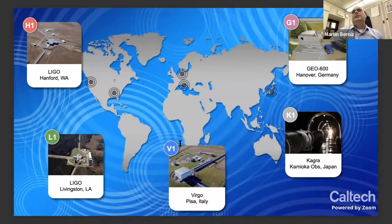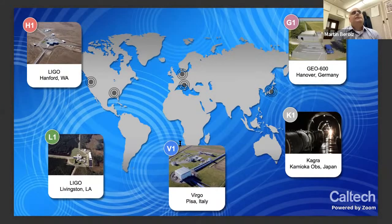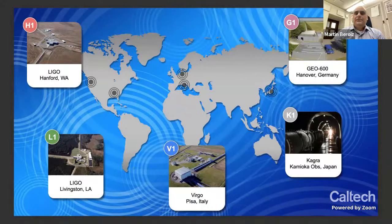This is currently the detectors for which we have data. There are two main ground-based observatories in the United States — one in Hanford, Washington, and the other in Livingston, Louisiana — and this comprises the LIGO detector set. There are a few others in Europe: we have Virgo in Italy and GEO 600 in Germany. And now we have KAGRA in Japan as well, and we have data for all of these. If you're interested in getting data on any of these detectors, you can find them at gwosc.org.